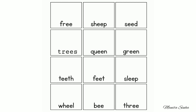Now read these words. Three. Cheese. Teeth. Wheel. Sheep. Queen. Feet. Bee. Seed. Green. Sleep.